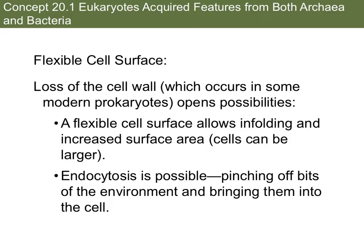Let's talk about the importance of some of these features. First of all, the flexible cell surface — the loss of that cell wall, which occurs in some modern prokaryotes — opened up some possibilities. The cell wall is like a literal wall around the cell that would prevent things from passing in and out of the cell. When that cell wall is lost, it allows for infolding of that plasma membrane and created larger surface areas. Another important feature about the infolding of the plasma membrane is that chemical reactions could take place there in prokaryotes that later would arise or take place in organelles in eukaryotic cells. Another important key factor about that flexible surface is that now endocytosis is possible — this is the pinching off of bits in the environment and bringing them into the cell.